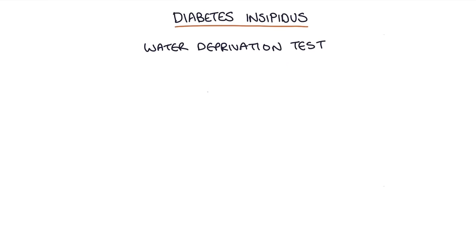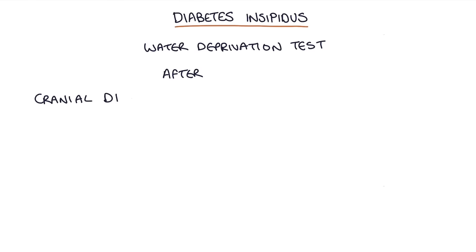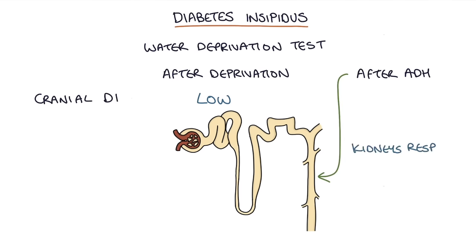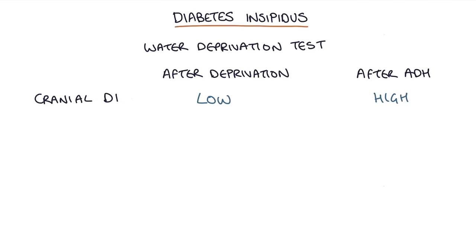In cranial diabetes insipidus the patient lacks ADH, so the kidneys are still able to respond to ADH. Initially, after the eight-hour period of water deprivation, the urine osmolality will still be low as it continues to be diluted by the excessive water secretion by the kidneys. Then, after the synthetic ADH has been administered, the kidneys will start to respond by reabsorbing water and concentrating the urine. So eight hours after the ADH is given, the urine osmolality will be high, confirming cranial diabetes insipidus with normally functioning kidneys.